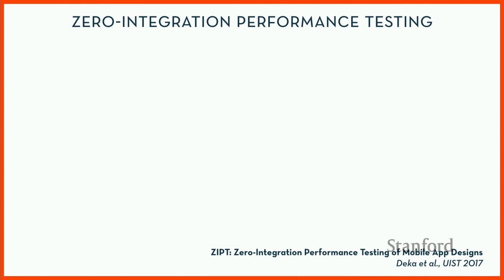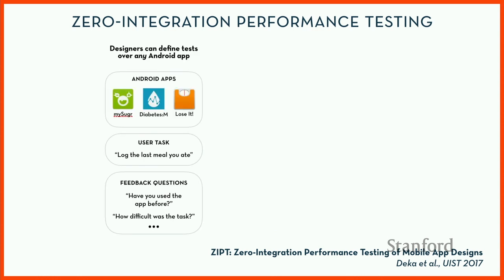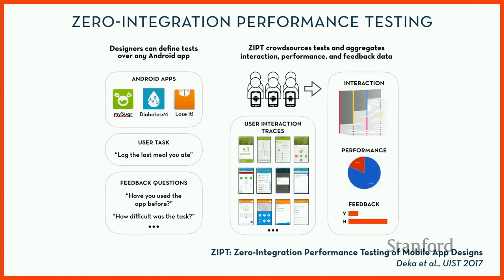We built a system called ZIPPED — Zero Integration Performance Testing. At a high level, a designer can define different tests or tasks they want done over any Android app in the Play Store. ZIPPED puts the test on a crowdsourced platform like Mechanical Turk, asks users to perform the task on the app, collects multiple traces from all these users, and aggregates the data into visualizations that surface design insights.